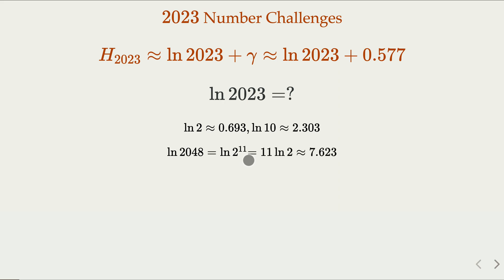So plug in the values here. We got approximately 7.623. Of course, that will give an upper bound, because 2023 is smaller, and log is a strictly increasing function, even though the rate of increase gets smaller and smaller, as n gets bigger.